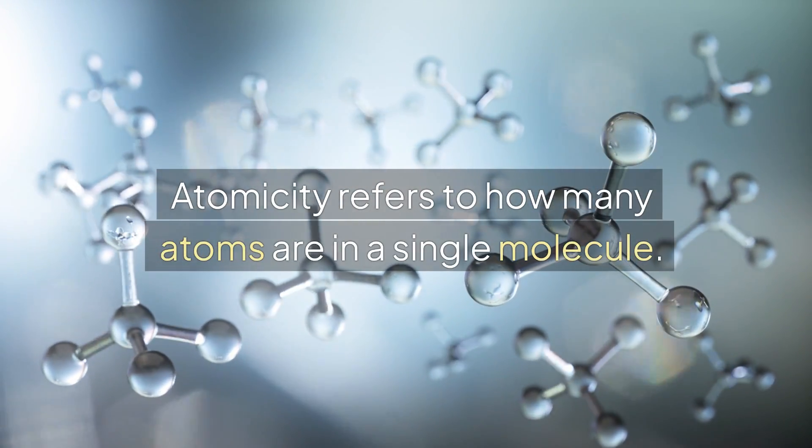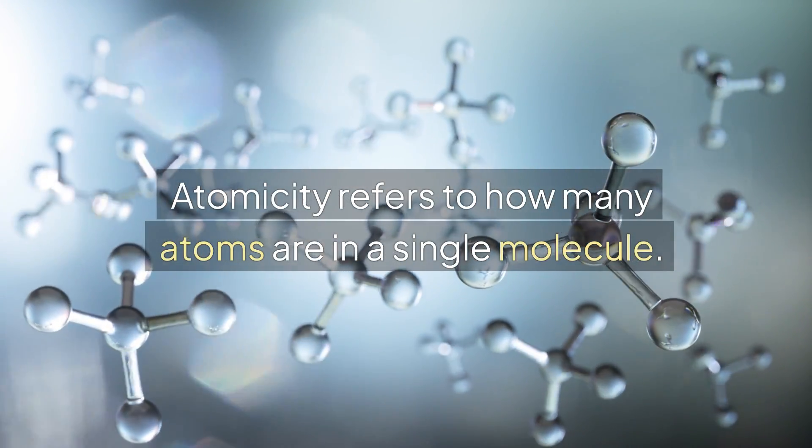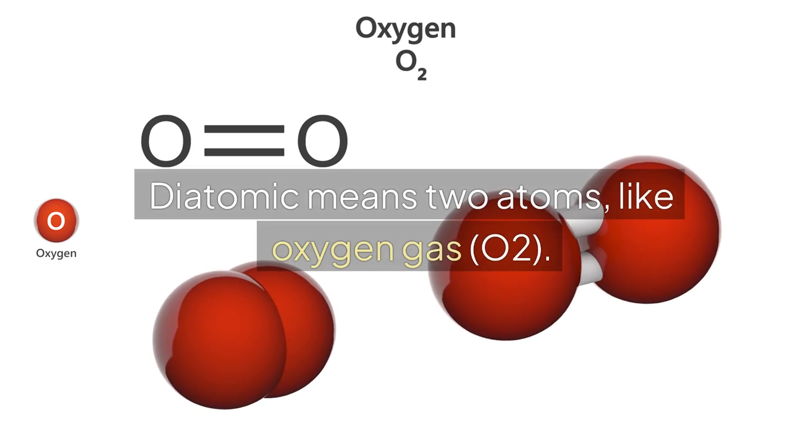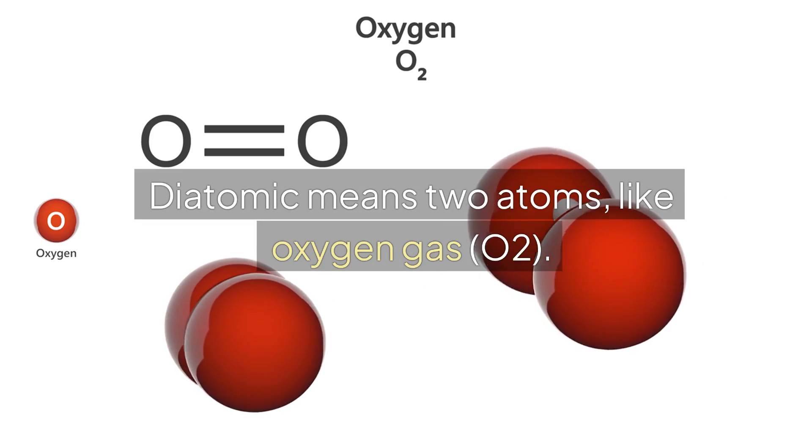Atomicity refers to how many atoms are in a single molecule. Monoatomic means one atom, like argon gas. Diatomic means two atoms, like oxygen gas, O2.